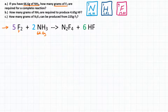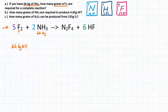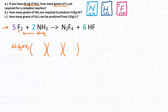We want to know how much F2 we also need to react completely with this 66.6 grams. So we're going to do our stoichiometry problem starting with what we know, which is 66.6 grams of NH3. We're going to multiply by three conversion factors — three fractions — in order to calculate the mass in grams of F2 that we need.